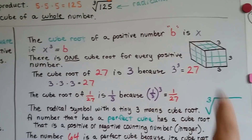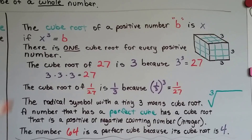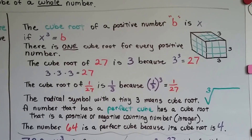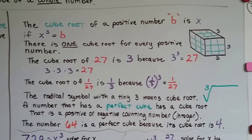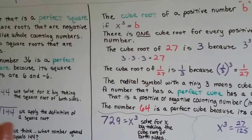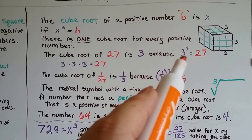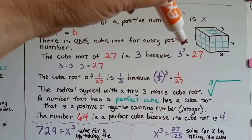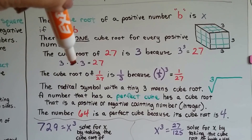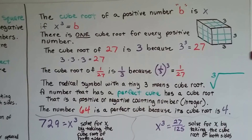So the cube root of a positive number b is x if x cubed equals b. There's one cube root for every positive number, so this one doesn't have the negative and positive like square roots do. The cube root of 27 is 3 because 3 to the third power — 3 cubed — equals 27. 3 times 3 is 9, and 9 times 3 is 27, so 3 times 3 times 3 is 27.